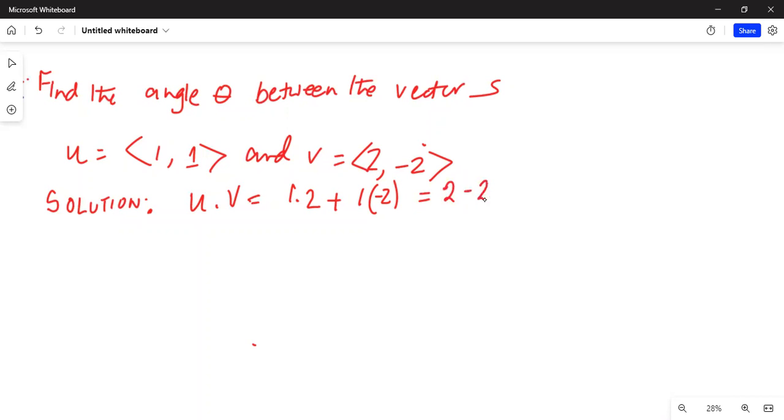minus 2 is equal to 0. Now magnitude of vector u is equal to square root of 1 squared plus 1 squared